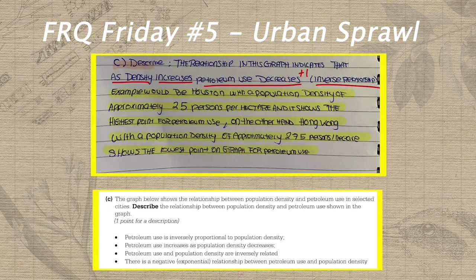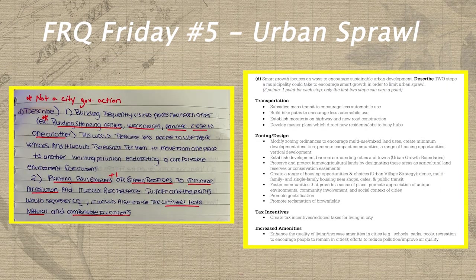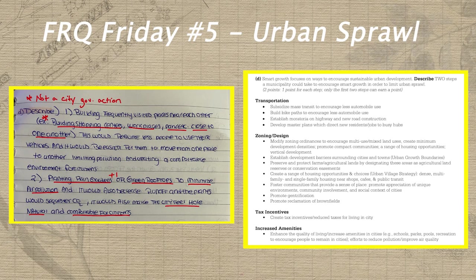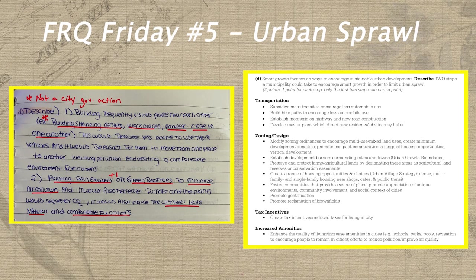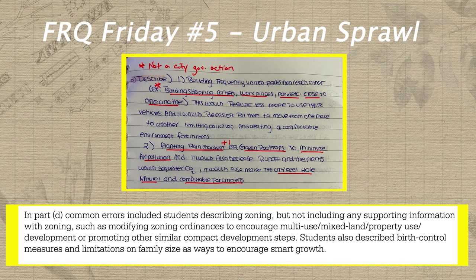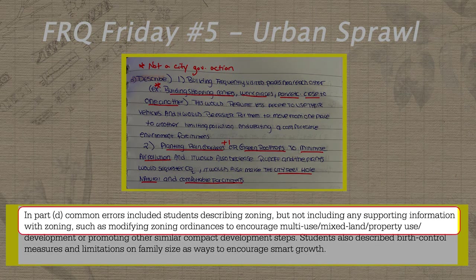Luckily, Lean gets back on track in part C by correctly stating that as density increases, petroleum use decreases. In part D, Lean earns another point for describing how cities can limit urban sprawl by planting rain gardens and green rooftops to minimize air pollution. However, her first answer of building shopping centers, workplaces, and parks close together isn't quite enough to earn the mixed land use point from the rubric, because cities don't choose the exact locations of shopping centers and workplaces — rather, they encourage them through local rules called the zoning ordinance. This was actually such a common mistake that the scoring commentary from the College Board addresses it directly, noting that many students in 2015 described mixed land use the way Lean did, but failed to describe how cities can actually encourage this to happen.